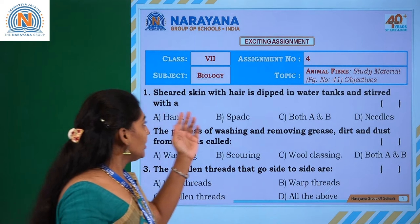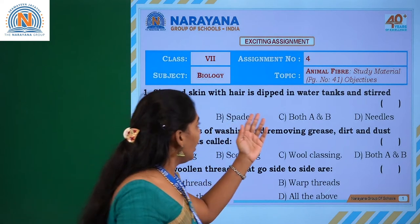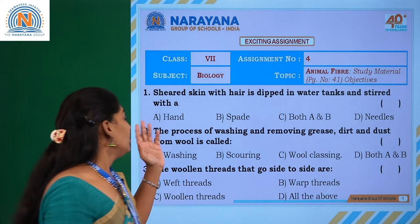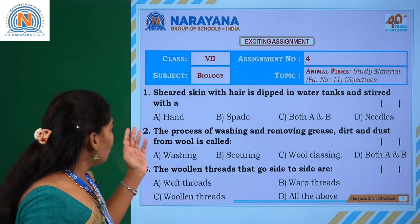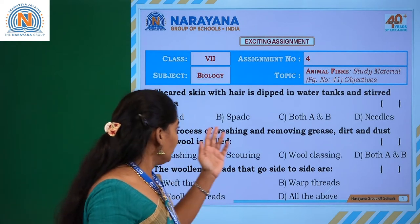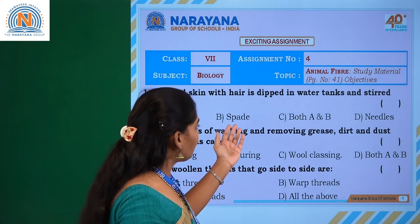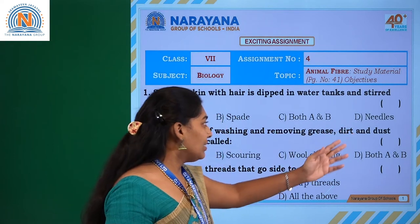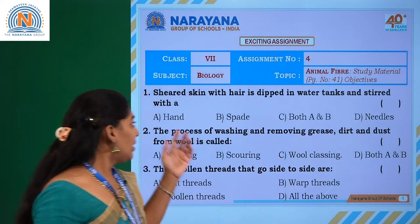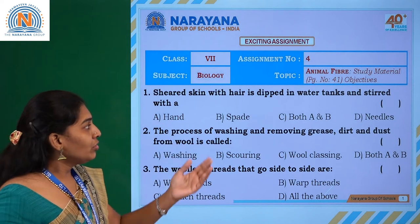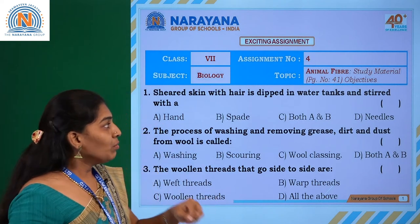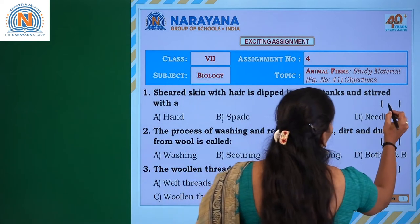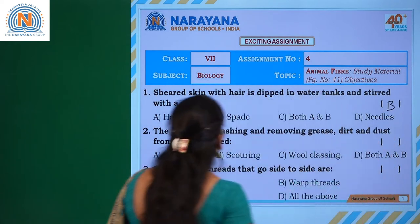The first question: sheared skin with the hair is dipped in the water tanks and stirred with it. Options given are: option A - hand, option B - spade, option C - both A and B, and option D - needles. The answer is option B, spade - they are going to dip that in the water tanks.